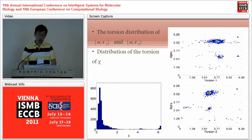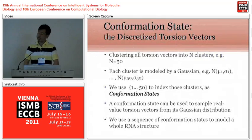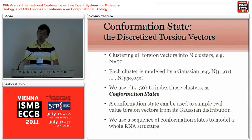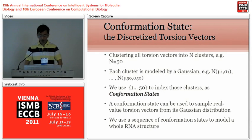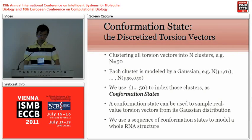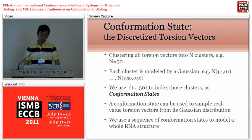With this observation, we abstract the angle vector space using the concept of a conformation state. Specifically, we cluster all torsion vectors extracted from all known RNA structures into 50 clusters. For each cluster, we use a Gaussian distribution to model the data inside it. The conformation states are indexed from one to 50. For each conformation state, we can sample real-valued torsion vectors from its associated Gaussian distribution. A sequence of conformation states then models a whole RNA structure.